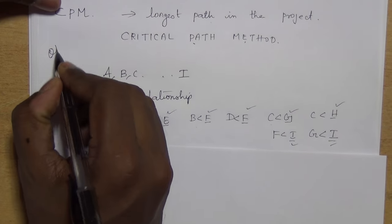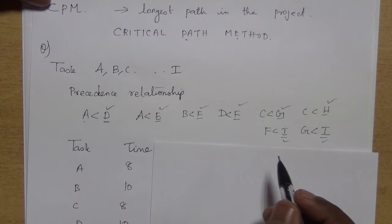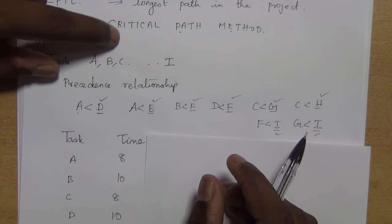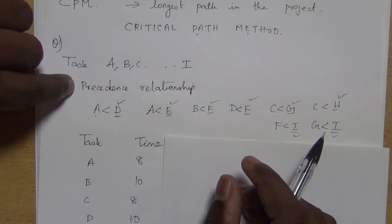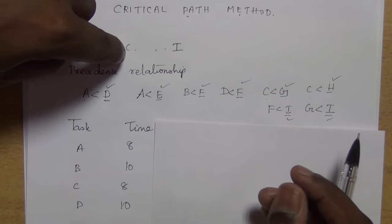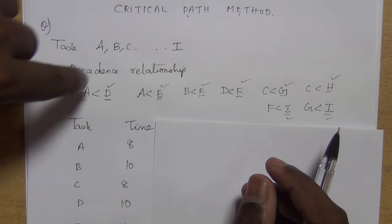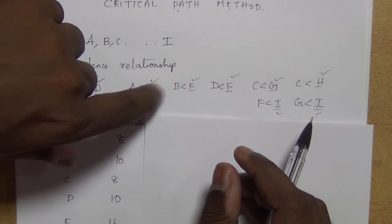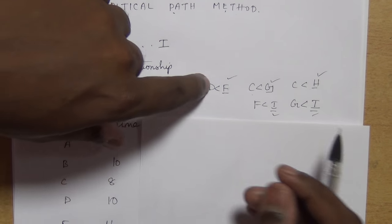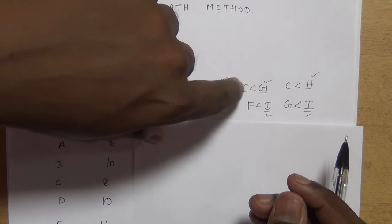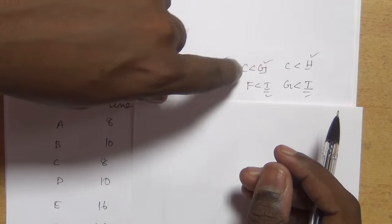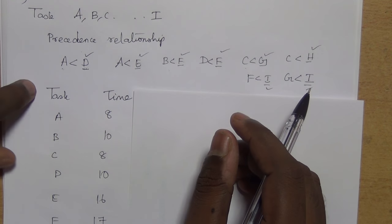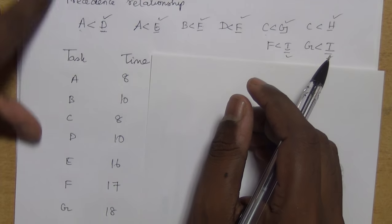So there is a problem. Assume we have tasks A, B, C up to I and the precedence relationship between these tasks is given by: A less than D, A less than E, B less than F, D less than E, C less than H, F less than I, G less than I. And the task and the duration is given in this data.